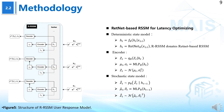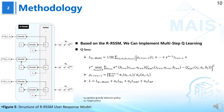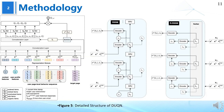Subsequently, we enhance the computational efficiency and reduce latency through the RetNet-based RSSM, which is crucial for real-time ads allocation. Lastly, employing multi-step queue learning, DUQN efficiently bootstraps reward information over multiple steps, refining the ad allocation process. This is the detailed structure of DUQN.